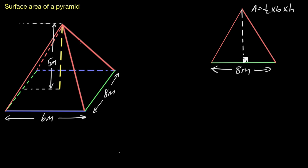This triangle is leaning into the pyramid, so the height is actually this distance here — not the five meters that goes straight up the center of the pyramid. That's the height of the pyramid itself. We need the height on an angle. That's called the slant height.